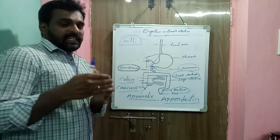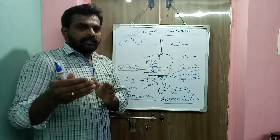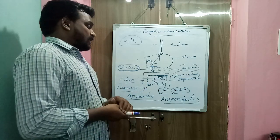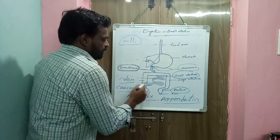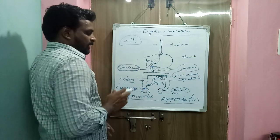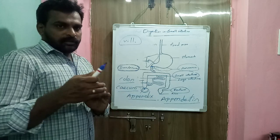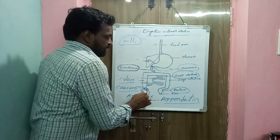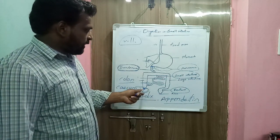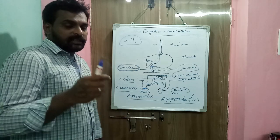Appendicitis is generally called a 24-hour pain condition, as it can rupture within 24 to 48 hours. The only solution for appendicitis is surgical removal of the appendix, a surgery called appendectomy. In children, the appendix is functional and helps in immunity, but in adults it is non-functional — a vestigial organ.